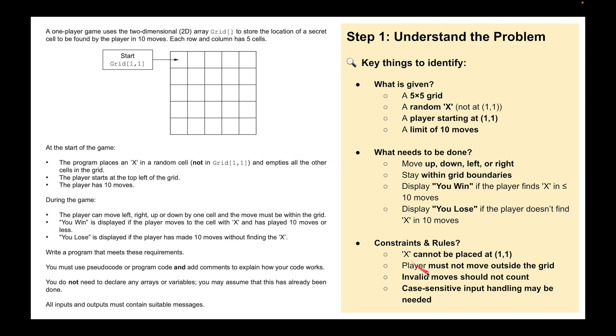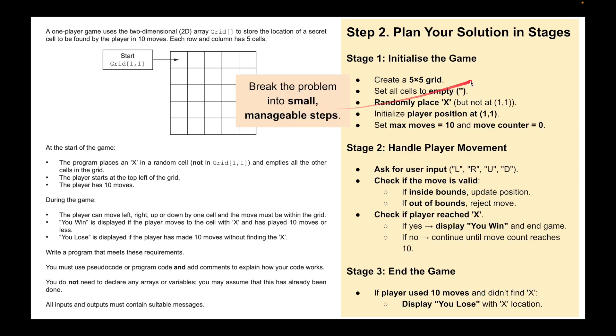X cannot be placed in position 1-1. That's a constraint. Players must not move outside the grid. Invalid moves should not count. Case-sensitive input handling may be needed. So some kind of validation there in terms of what the person enters.